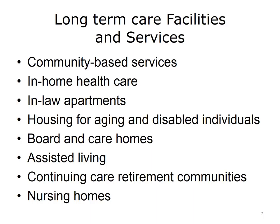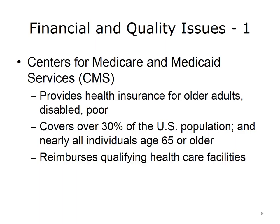This slide shows an overview of different types of long-term care options that are available. These options vary by location and by the level of service provided. Financing is an important issue in long-term care. Medicare and Medicaid cover health care for older, disabled, and poor Americans. The Centers for Medicare and Medicaid Services, or CMS, is the largest health care insurer in the U.S., covering over 30% of the U.S. population and nearly all people who are 65 years and older. Another important function of CMS is to provide reimbursement for health care centers that meet its criteria for health and safety.